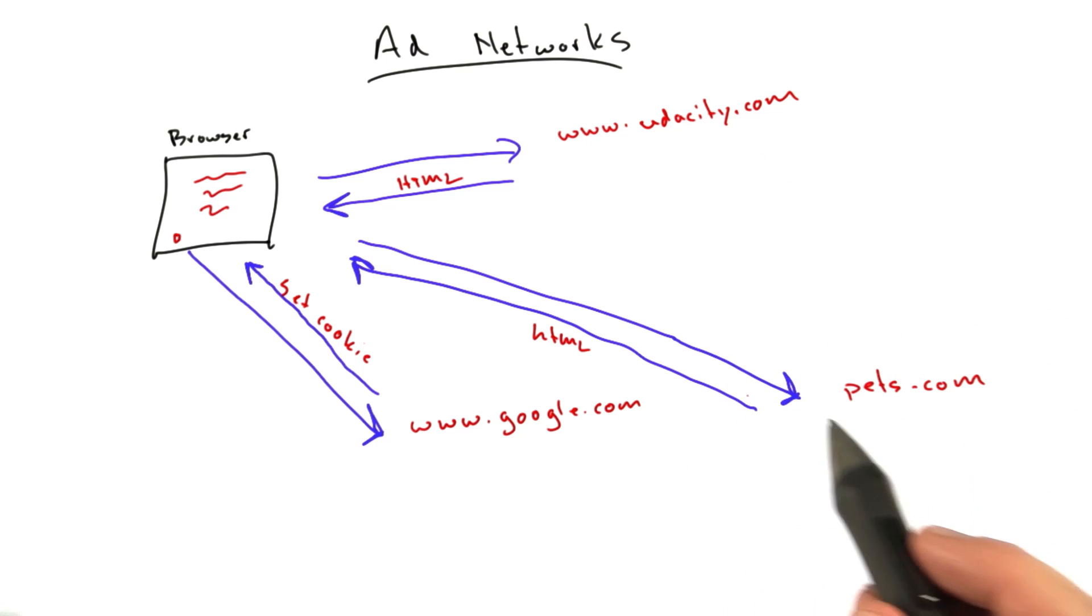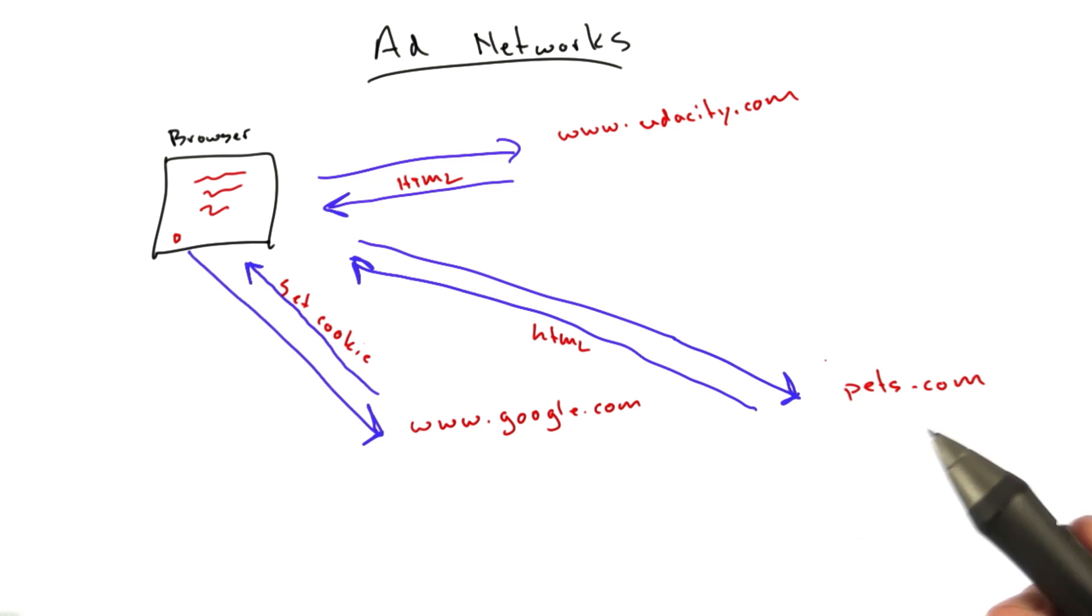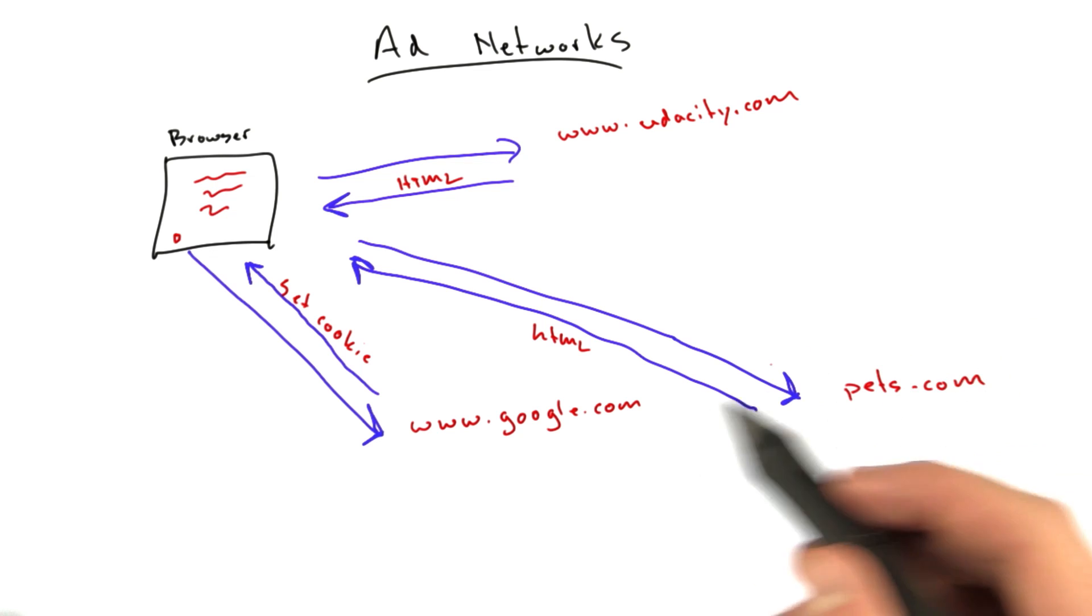And so now they know this information and they can give you ads that are more relevant to you, which is sometimes, you can argue that both ways. You can say, oh, that ad's more relevant to me, so I'm more likely to click on it. Maybe that's a good thing. Or it's creepy that this company knows all these different websites I've been to.